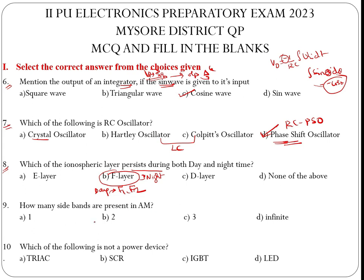How many sidebands are present in AM? That is two — it is also a repeated question. Which of the following is not a power device? TRIAC, SCR, and IGBT are all power devices. The option that is not a power device is LED, so the correct answer is LED.